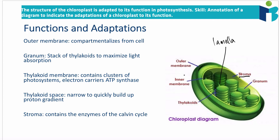How is the outer membrane adapted to its function? Its function is compartmentalizing the cell. Eukaryotes have this ability to section off parts of the cell so that it can perform specific functions. Photosynthesis requires specific conditions — the enzymes need certain pHs and certain conditions — and so the outer membrane is a way of blocking off the chloroplast from the rest of the cell.